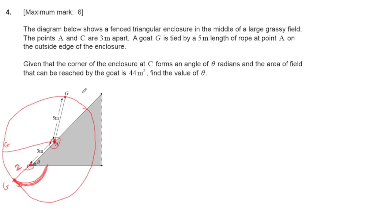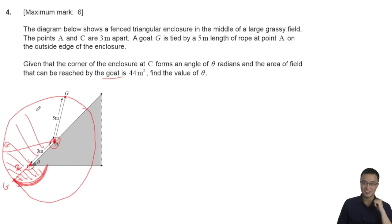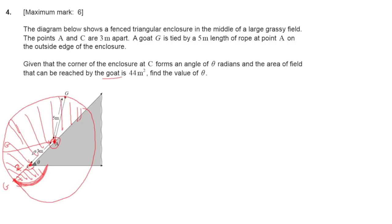The total area reachable by the chord, equal to 44, is made up of only these two regions. We can divide this into two parts: the first one is the semicircle of the bigger circle with radius five, and the second one is the area of the sector with radius two and angle equal to pi minus φ.